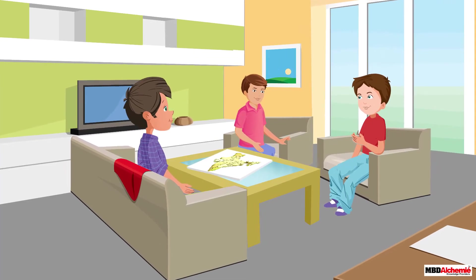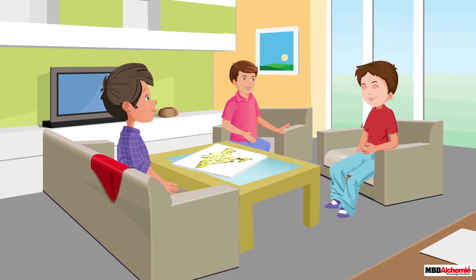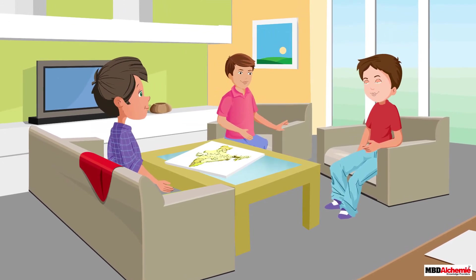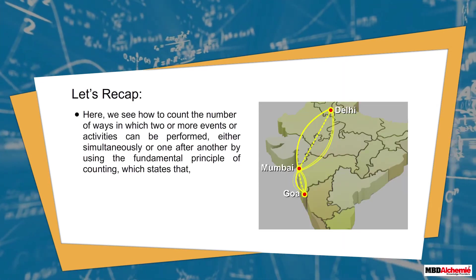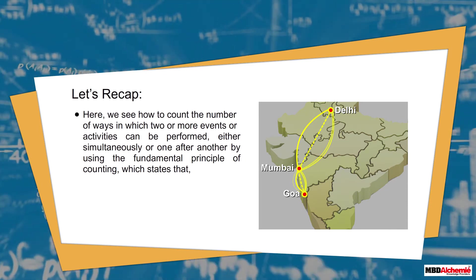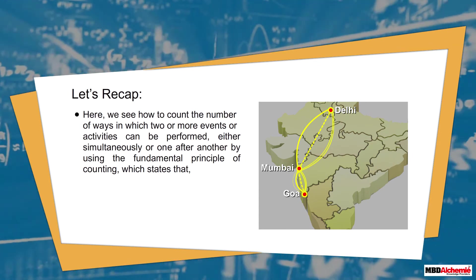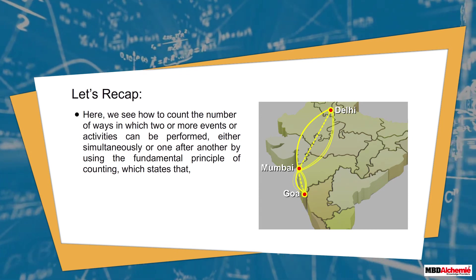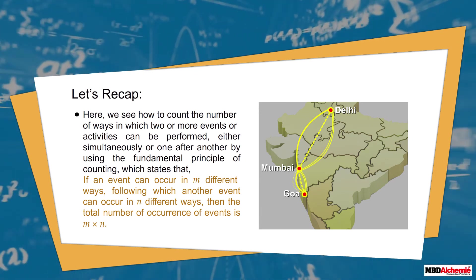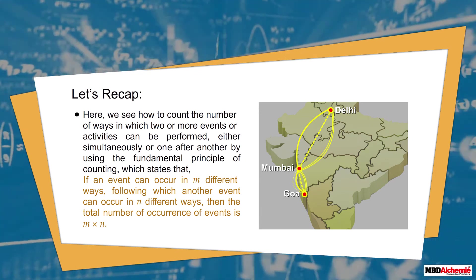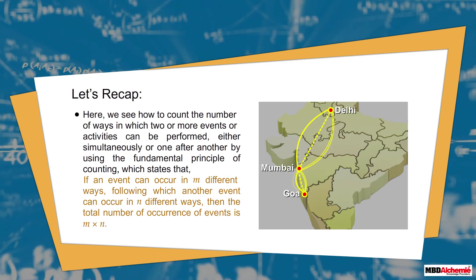Sid says they have so many options to choose from, and we are using the fundamental principle of counting to solve daily life problems. In recap: we see how to count the number of ways in which two or more events or activities can be performed, either simultaneously or one after another, using the fundamental principle of counting — if an event can occur in m different ways, following which another event can occur in n different ways, then the total number of occurrences is m multiplied by n.